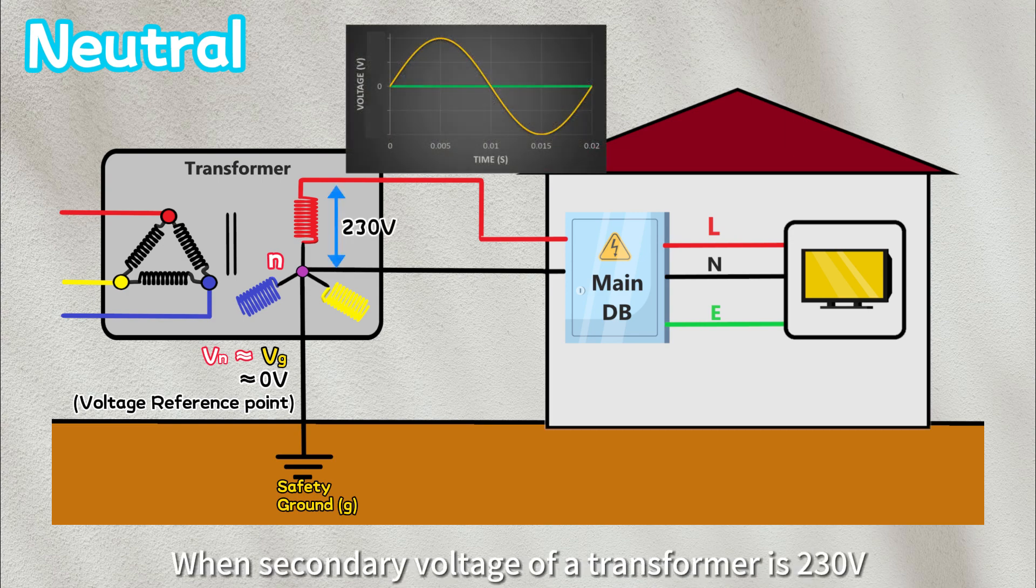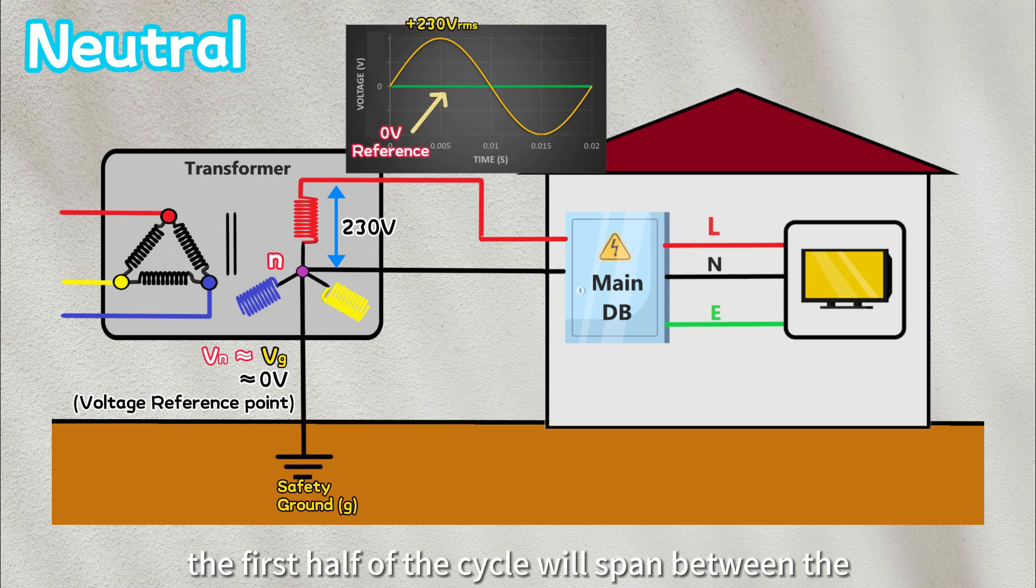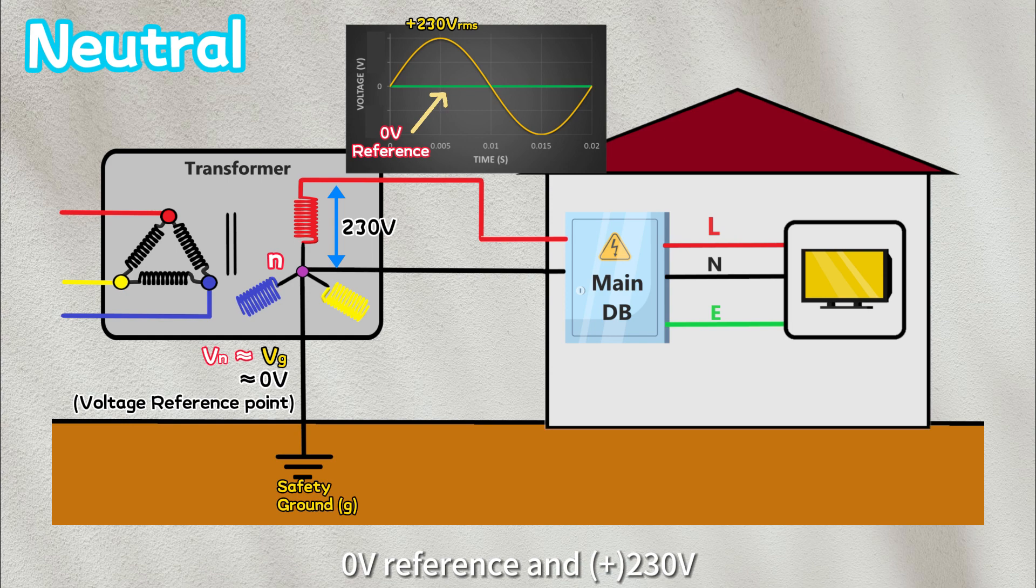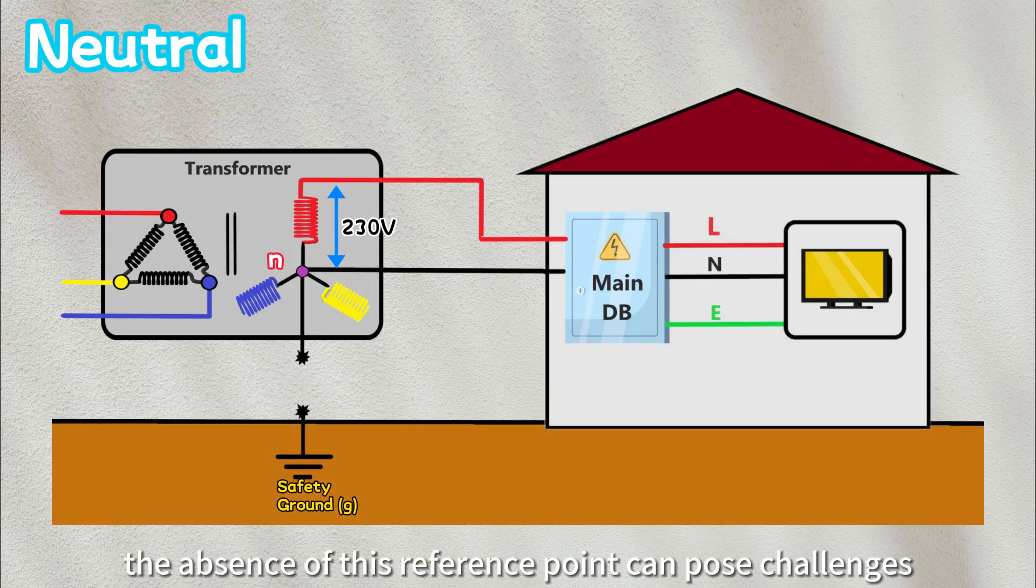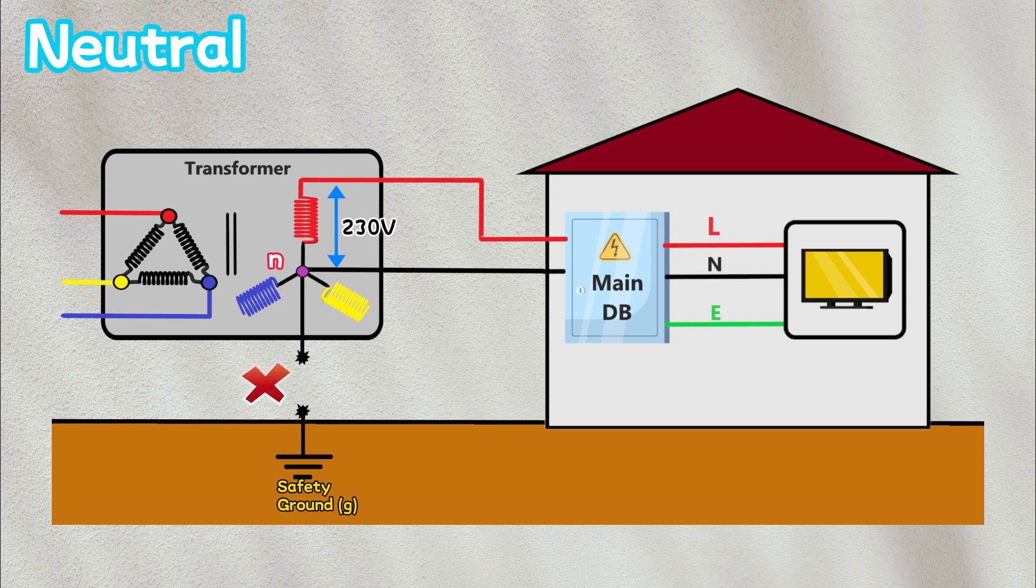In a system where secondary voltage of a transformer is 230 volts, the first half of the cycle will span between the zero volts reference and 230 volts, while the second half falls between zero volts and minus 230 volts. However, the absence of this reference point can pose challenges. For example,